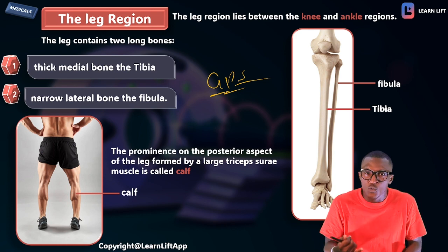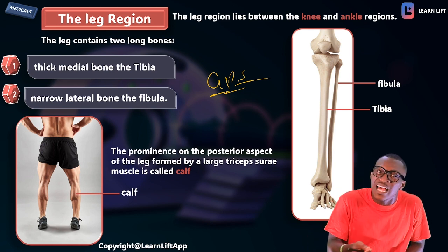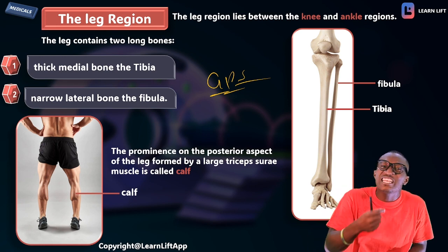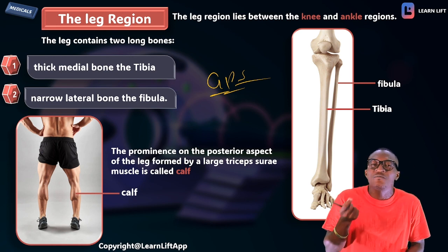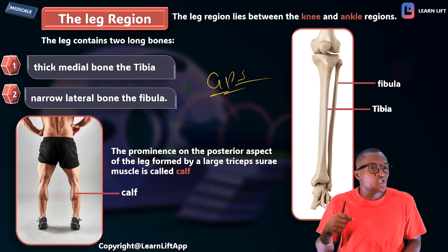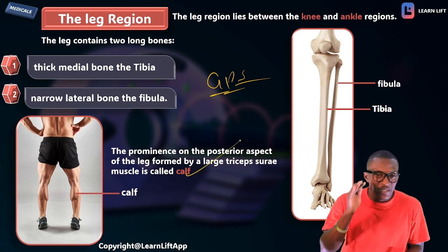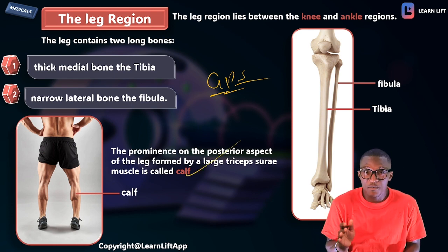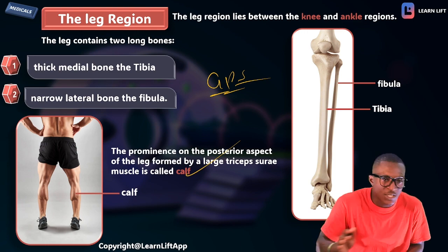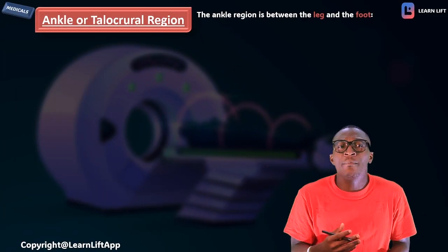Take note: the posterior aspect of the thigh is called the hamstring, but the posterior aspect of the leg is called the calf. Please take note of that because it will come up in MCQs — you will excel in anatomy.